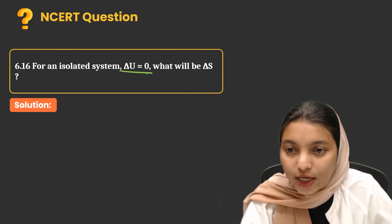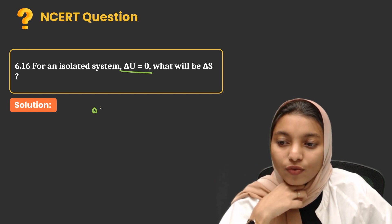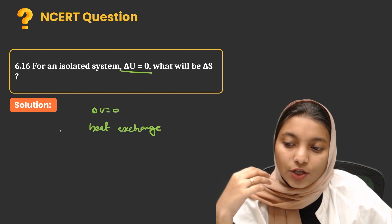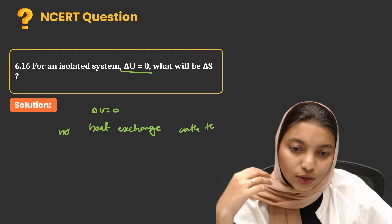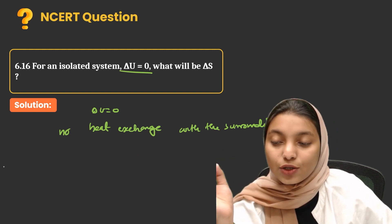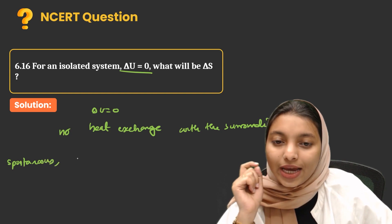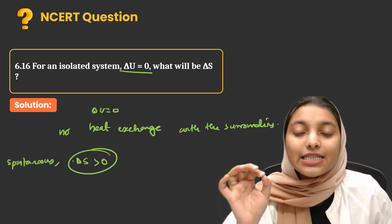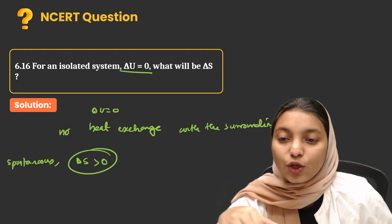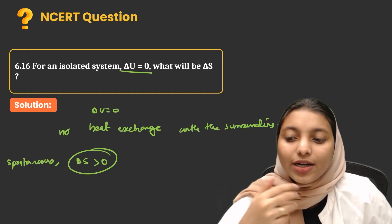For an isolated system delta U = 0 — what will be delta S? For an isolated system there is no heat exchange with the surroundings. For a spontaneous reaction in an isolated system, entropy will be increasing. So delta S will be greater than 0.